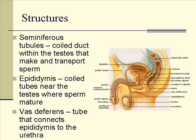Within the testes, there's a structure called the seminiferous tubules, and this is actually where the sperm is made. So to say that sperm is made in the testes is true, but the specific structure that does it is the seminiferous tubules. Right next to the testes, there's a series of coiled tubes called the epididymis, and this is where sperm are allowed to mature and are stored.